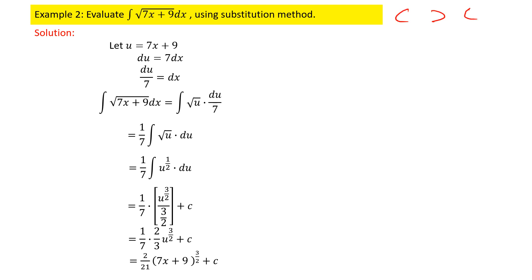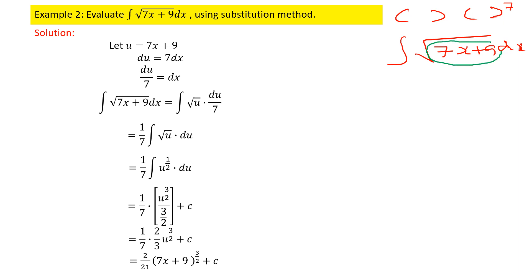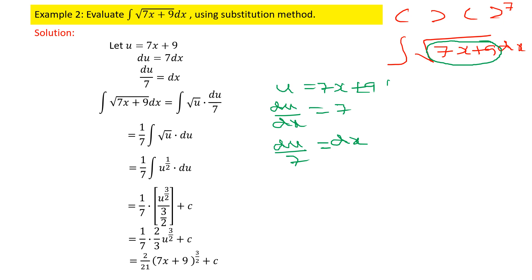In problem number two, there is no bracket with a power — instead we have a radical sign: integral of √(7x + 9) dx. Whenever a radical sign is given, whatever is inside the radical becomes your substituted variable. So let u = 7x + 9, giving du/dx = 7, or dx = du/7.